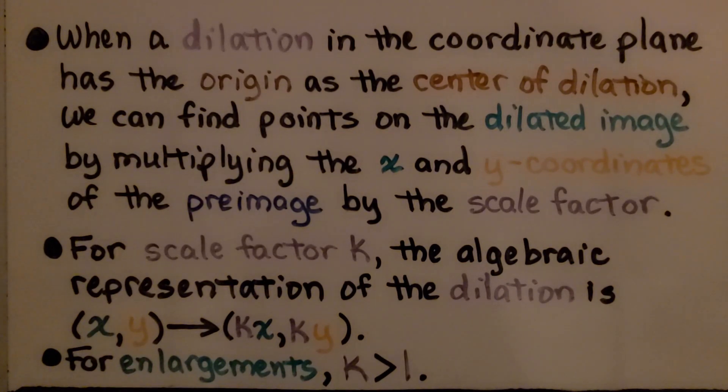For scale factor k, the algebraic representation of the dilation is: the x and y values will map to the scale factor k times that first value, the x, and the k scale factor times the y value.